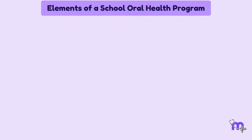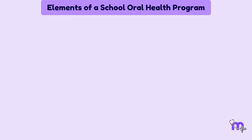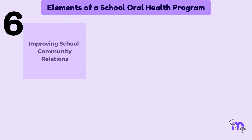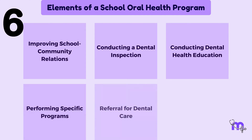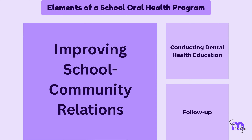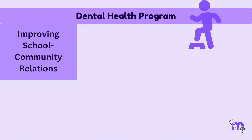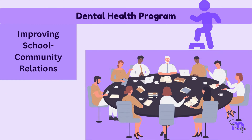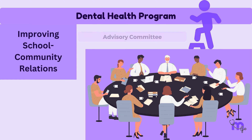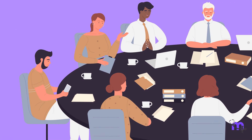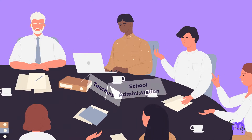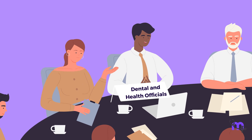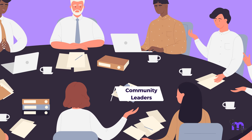There are six main elements or components of school oral health programs. The first element talks about improving school-community relations. One of the first steps in organizing a dental health program is forming an advisory committee. It should include representation from parents, teachers, school administration, dental and health officials, and the community leaders.